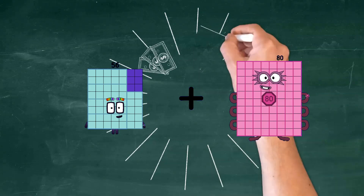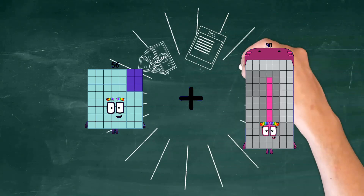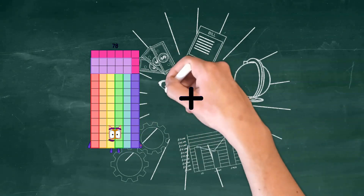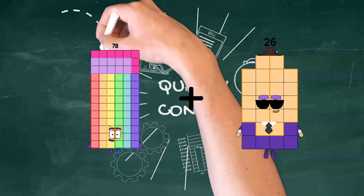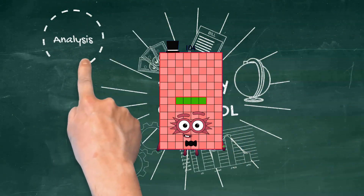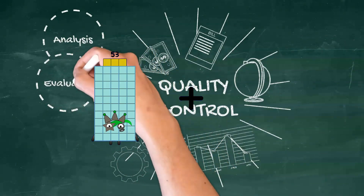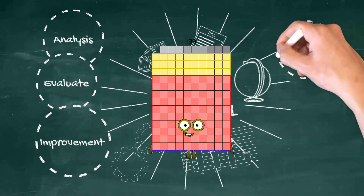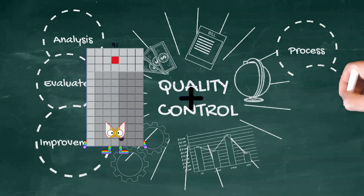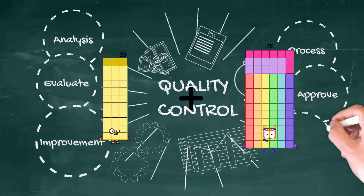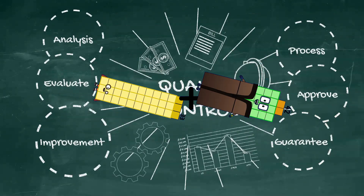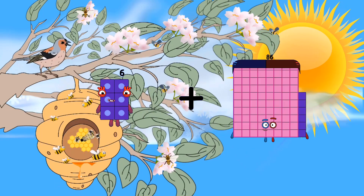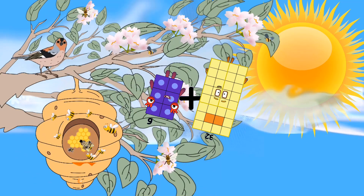56 Loss. 98 equals 154. 78 Loss. 26 equals 104. 52 Loss. 87 equals 139. 33 Loss. 42 equals 75. 6 Loss. 32 equals 38.